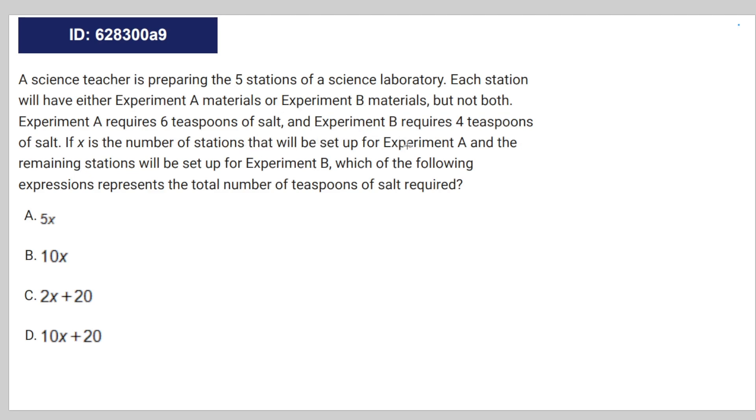Experiment A requires six teaspoons of salt and Experiment B requires four teaspoons of salt. If X is the number of stations that will be set up for Experiment A, and the remaining stations will be set up for Experiment B, which of the following expressions represents the total number of teaspoons of salt required?